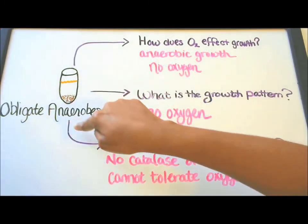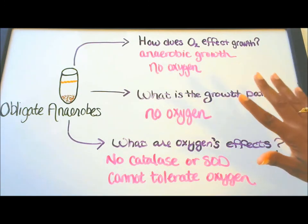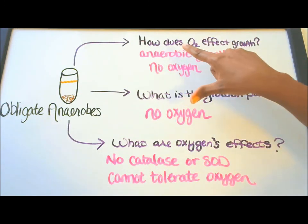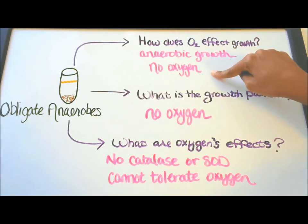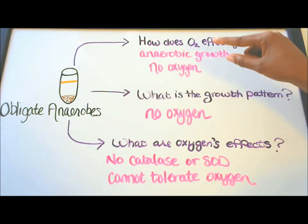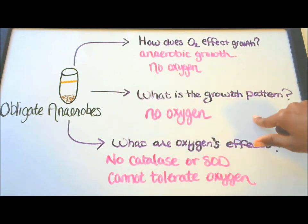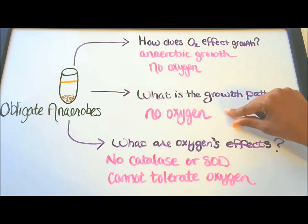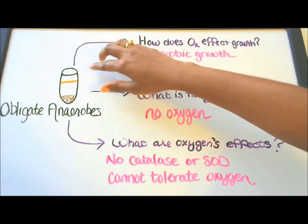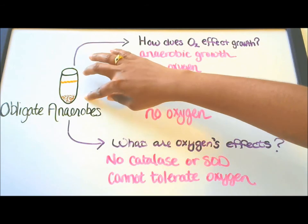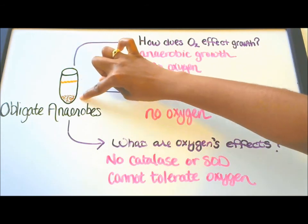Obligate anaerobes — we're entering the no oxygen zone. How does oxygen affect growth? No oxygen is required, so this is anaerobic growth. What are their growth patterns? No oxygen is required. You can see in the test tube that all the microbes are at the bottom where oxygen is not present.